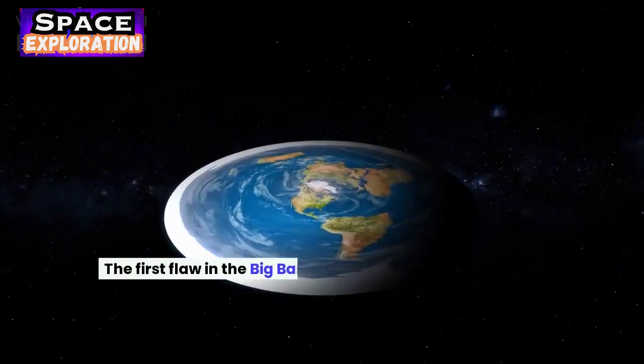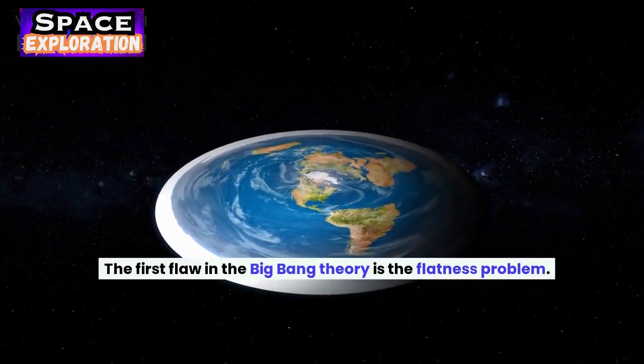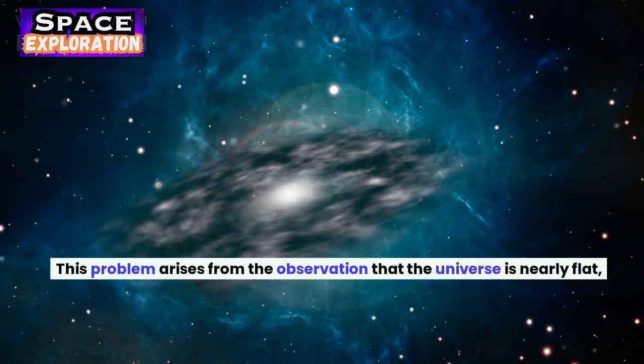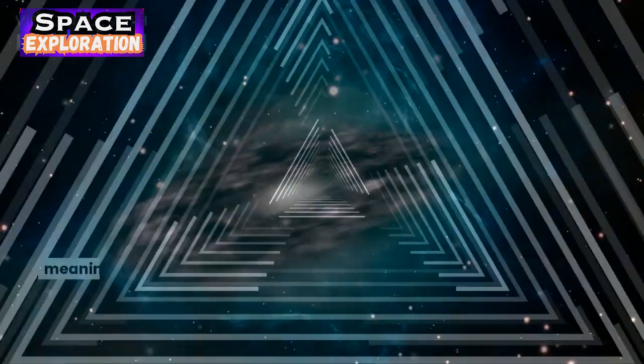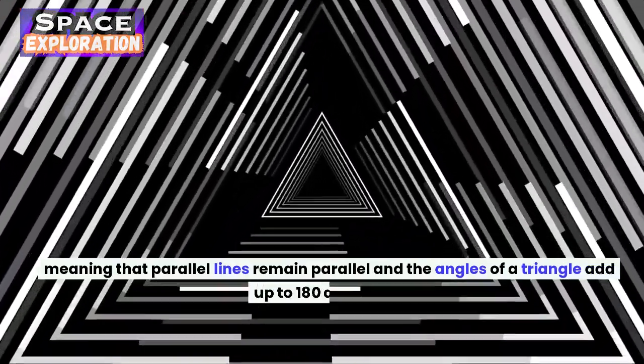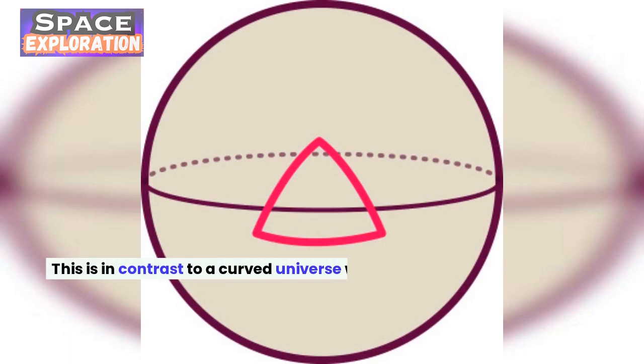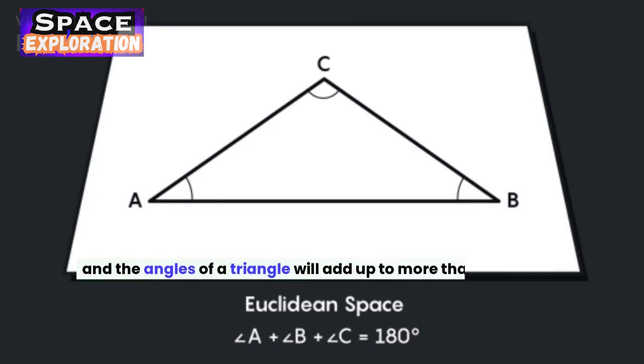The first flaw in the Big Bang Theory is the flatness problem. This problem arises from the observation that the universe is nearly flat, meaning that parallel lines remain parallel and the angles of a triangle add up to 180 degrees. This is in contrast to a curved universe where parallel lines will eventually converge and the angles of a triangle will add up to more than 180 degrees.